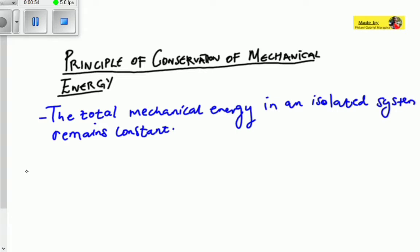Each and every principle of conservation talks about the conservation of something — it can be the principle of conservation of charge or the principle of conservation of energy. This principle suggests that when there is a system that involves mechanical energy, it will remain constant initially and finally. The mechanical energy you observe at the first will be the mechanical energy you observe at the last.